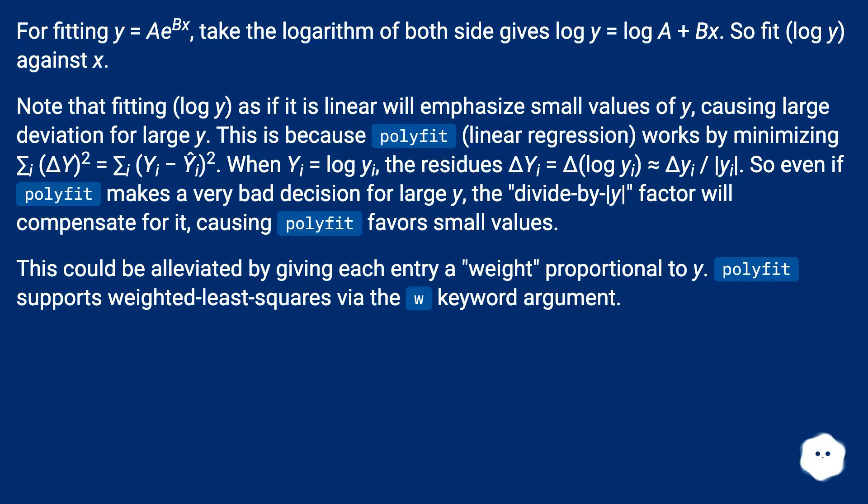When Ŷ equals log y, the residues ΔY = Δ(log y) is almost equal to Δy / y. So even if polyfit makes a very bad decision for large y, the Δy / y factor will compensate for it, causing polyfit to favor small values.